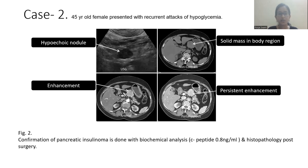Case 2: a 45-year-old female presented with recurrent attacks of hypoglycemia. On ultrasound, we can see a well-defined hypoechoic nodule. On non-contrast CT, we can see a solid mass in the body region. On arterial phase and portal venous phase, we can see persistent enhancement of the lesion. Confirmation of pancreatic insulinoma was done with biochemical analysis, including C-peptide, and histopathology post-surgery.